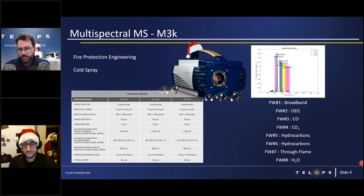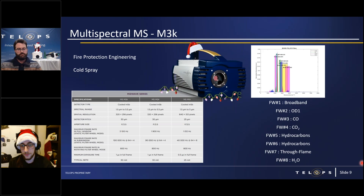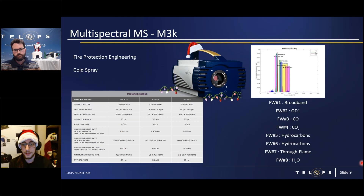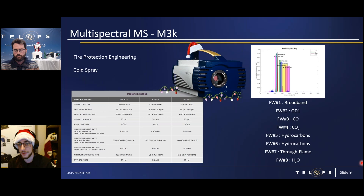Now we'll talk about the multi-spectral camera. This is one of our most powerful cameras, both spectrally and temporally. While you give up some temporal resolution compared to the fast cameras, at a maximum filter wheel speed of 800 Hz you gain spectral fidelity — you're able to place up to eight spectral filters in the filter wheel. Here we have a combustion configuration with OD filters for carbon dioxide, carbon monoxide, hydrocarbon, through-flame, and H2O filters. The camera comes in various sensor sizes up to the M3K model, capable of 800 Hz in multi-spectral mode.